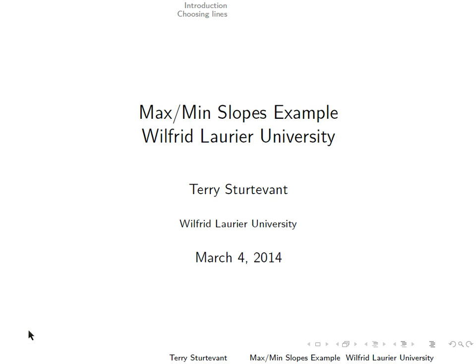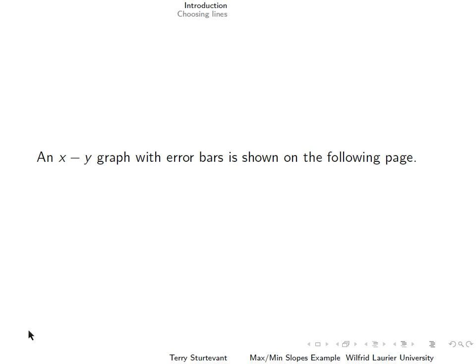This document gives an example of how to use maximum-minimum slopes to calculate uncertainties for linear graphs. An x-y graph with error bars is shown on the following page.